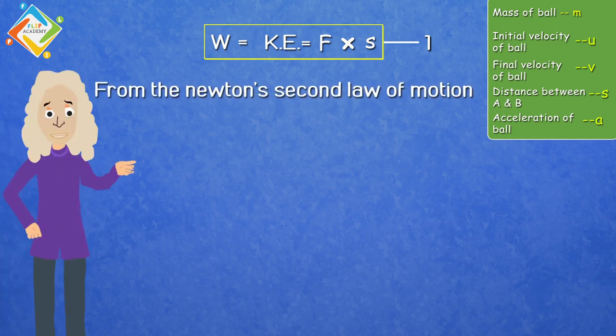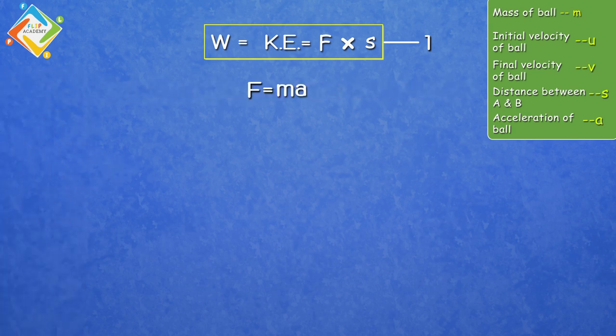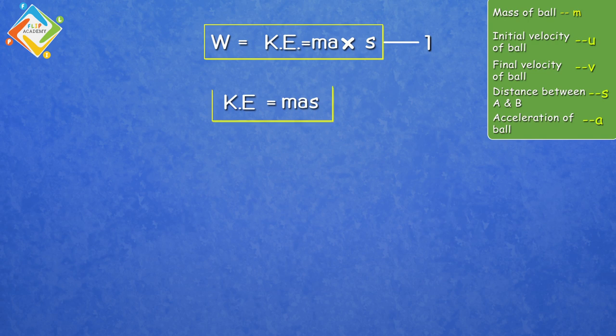From Newton's second law of motion, it is given by F equals M into A. Put this value of F in equation number 1. It will become kinetic energy equals M into A into S. Mark this as equation number 2.